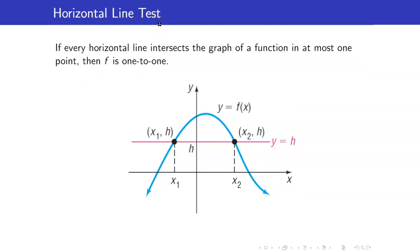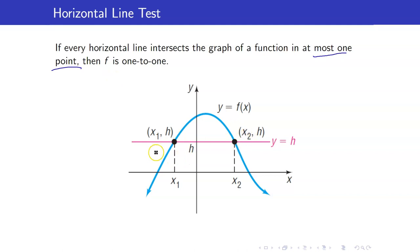How do we determine if a function represented as a graph is one-to-one? This can be answered by the horizontal line test. What you need to do is draw a horizontal line. If every horizontal line intersects the graph of a function in at most one point — and it is at most one point because it is possible that your horizontal line will not intersect your graph — but in case it does, then it must intersect the graph at exactly one point.